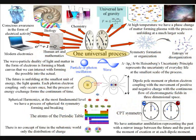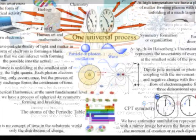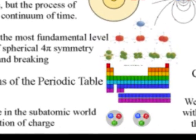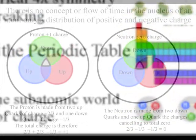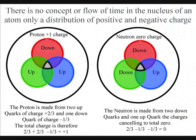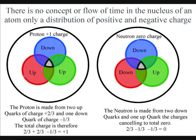If we start at the bottom of the diagram, we see that there is no flow or concept of time in the subatomic world within the atoms. All we have is the distribution of positive and negative charge within the atoms.